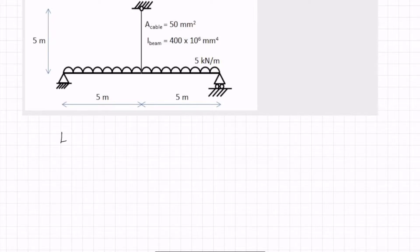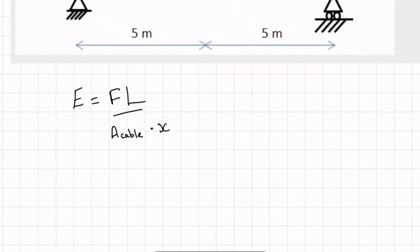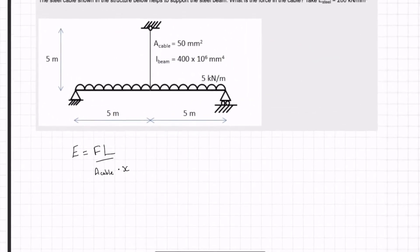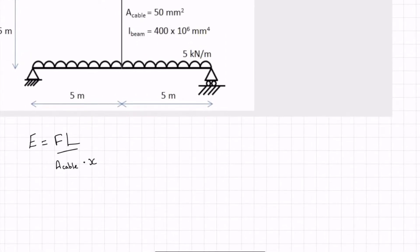So the Young's modulus will be equal to the force times the length over area of the cable times the extension. Maybe let's just write that as a cable and extension. And we're given these bits of information in millimetres and kilonewtons, so let's do it in kilonewtons and millimetres then.